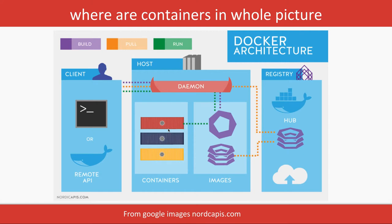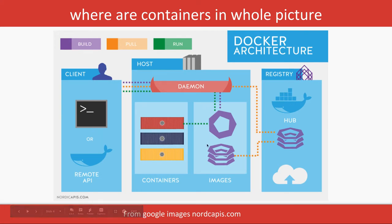The host operating system running the Docker daemon processes all these commands. If you hit `docker pull`, it checks whether the image is available locally — if not, it pulls it from Docker Hub. Pull is represented by yellow dots in the diagram — the image is pulled from the registry and stored in the local images list.